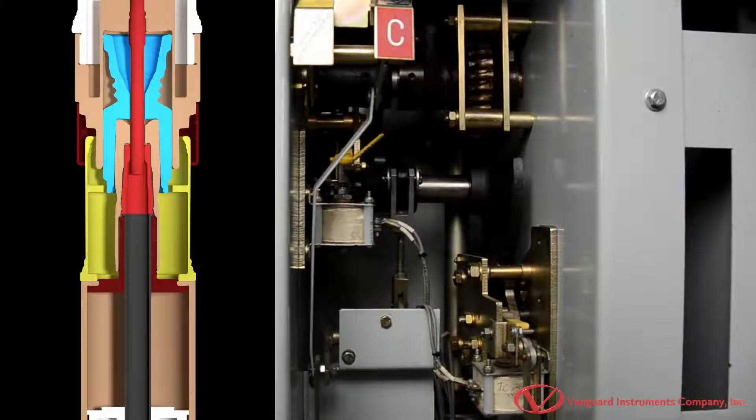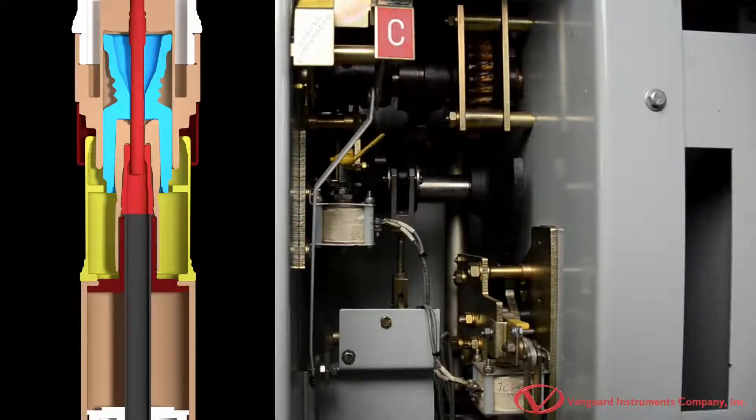Ideally, in the closed position, a circuit breaker should act as a perfect conductor to ensure optimal current flow.